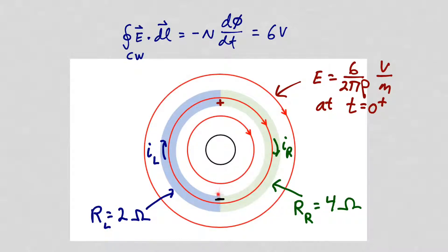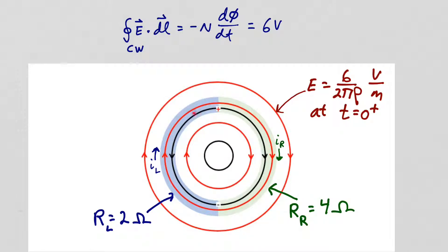This charge buildup results in additional electric fields emanating from the positive charges at the top boundary and terminating on the negative charges at the bottom boundary. In the left half ring, this charge-induced electric field is in the opposite direction to the electric field from the ramping magnetic flux, so the total electric field intensity in the left half ring is reduced. In the right half ring, the charge-induced electric field is in the same direction as the field from the solenoid, so the electric field intensity in the right half ring increases.